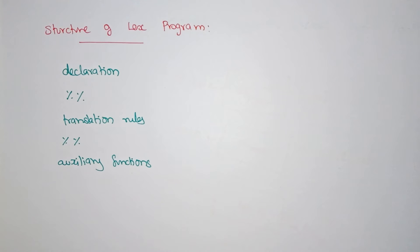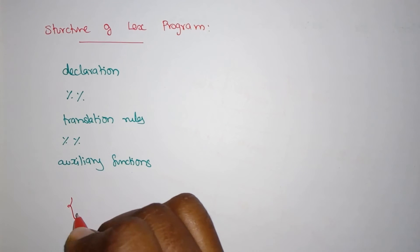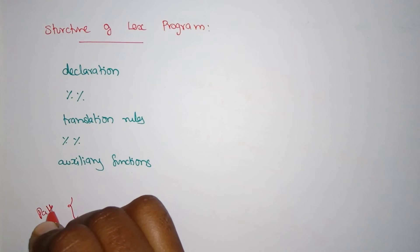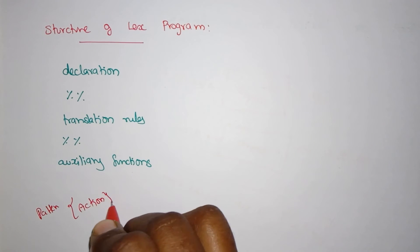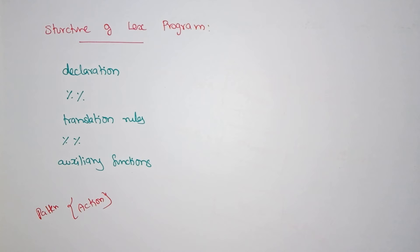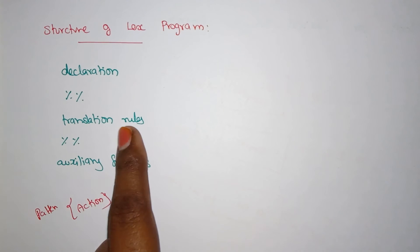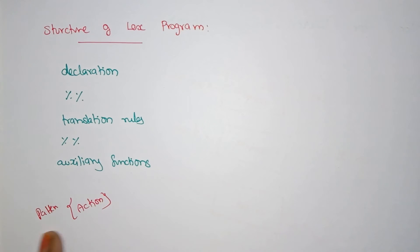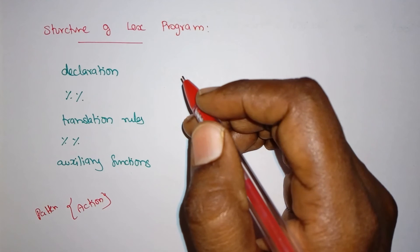Each and every rule has this structure: a pattern followed by an action. So all the translation rules specify, for each set of patterns, what is the corresponding action. This is how translation rules are represented.